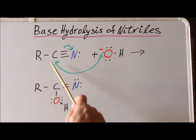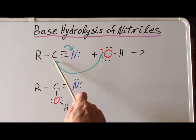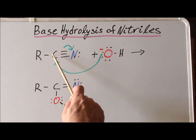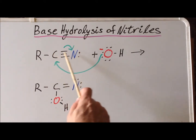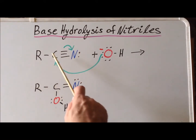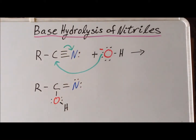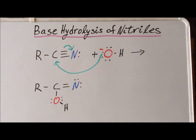As we have the nucleophilic attack on carbon forming one bond, one of the carbon-nitrogen bonds has to break, with the electron pair going to nitrogen. This particular transition state will be looked at in greater detail for the three specific examples that we are going to discuss in this video.